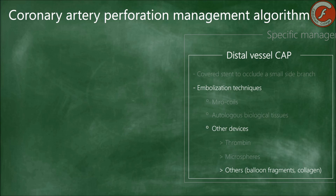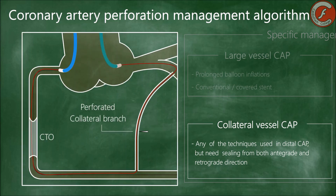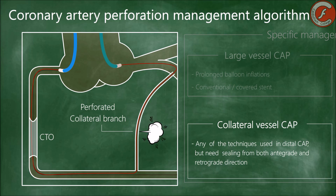Now we turn to perforations that occur in the collateral circulation vessels, a characteristic complication of the retrograde approach of chronic total coronary occlusions. In general, many of the aforementioned sealing techniques can be used, but taking into account that, unlike previous cases, sealing must be performed simultaneously through both the anterograde and retrograde approaches.